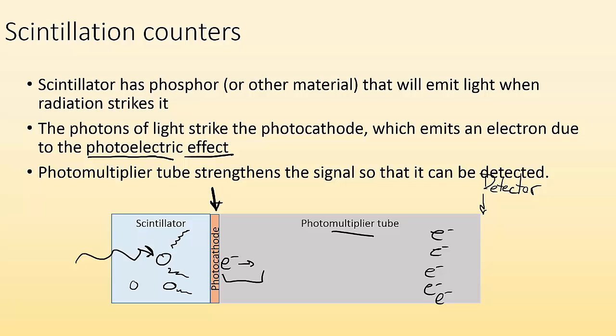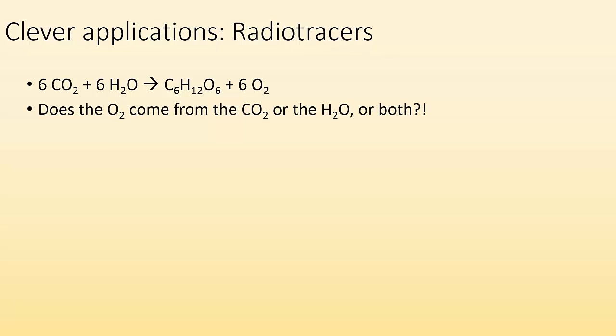All right, so other clever applications. We can do things with these radioactive particles. We can use radiotracers, which is pretty much just using radioactive elements and atoms to trace how things are going on. So let's say we had this chemical reaction, photosynthesis. We got carbon dioxide and water giving us sugar and oxygen. Well, the question is, does the O2 come from the CO2 or from the H2O? Because they both have oxygen. Or is it a little bit of both? How do we even know?